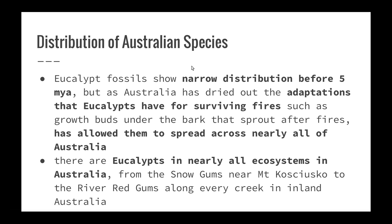Lastly, we look at the distribution of Australian species as a result of these environmental changes. Eucalypt fossils show a narrow distribution before 5 million years ago, but as Australia dried out, the adaptations eucalypts have for surviving fires — such as growth buds under the bark that sprout after fire — allowed them to spread across nearly all of Australia, from snow gum species near Mount Kosciuszko to river red gums along every creek in inland Australia.